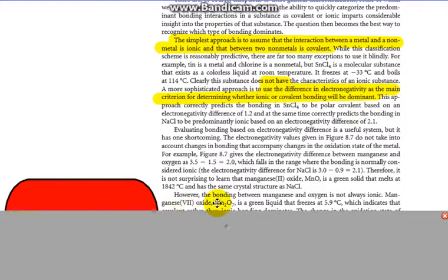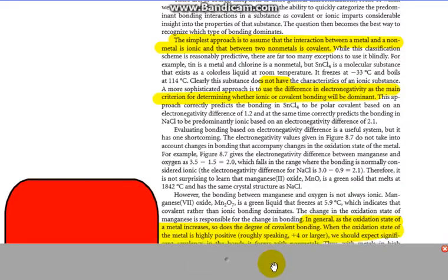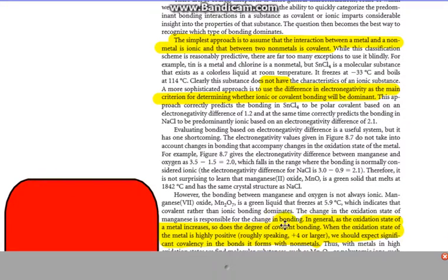However, the bonding between manganese and oxygen is not always ionic. For example, manganese 7 oxide Mn2O7, manganese has a charge of plus 7 compared to the manganese oxide we were talking about further up, and it freezes at 5.9, which indicates it has covalent characteristics, so low boiling, low melting point. The change in oxidation state of manganese is responsible for that change in bonding.